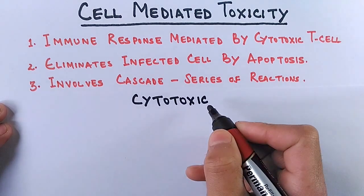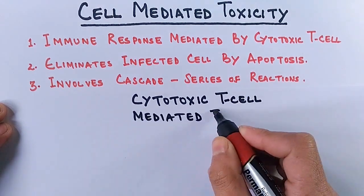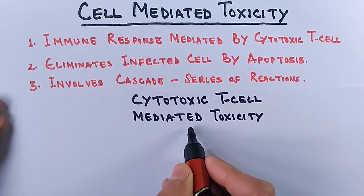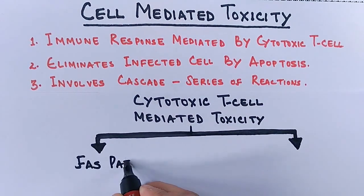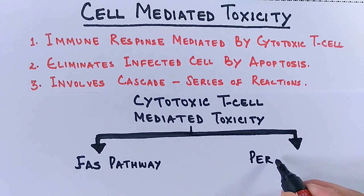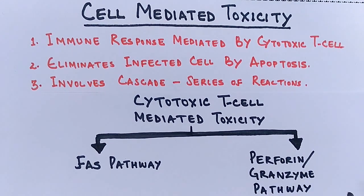Cytotoxic T cell-mediated toxicity has two pathways: the FAS pathway, and the perforin-granzyme pathway. Here we will be discussing the FAS pathway.